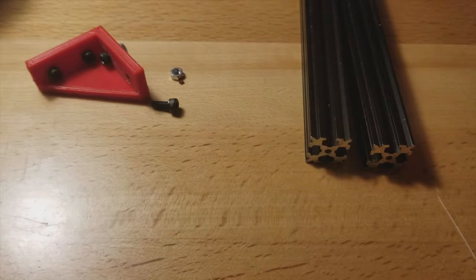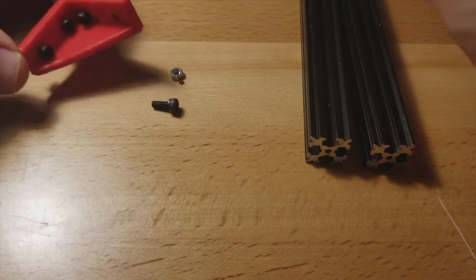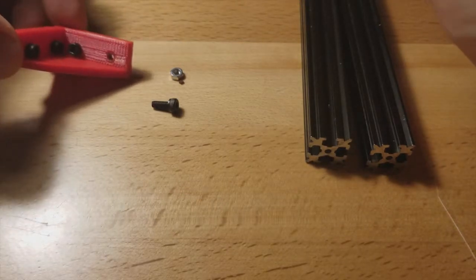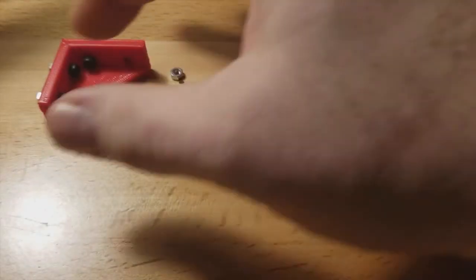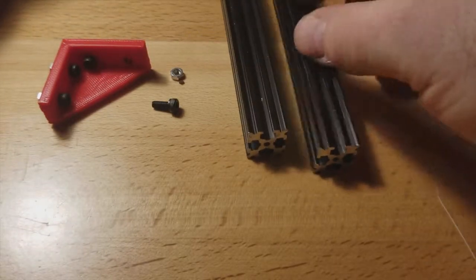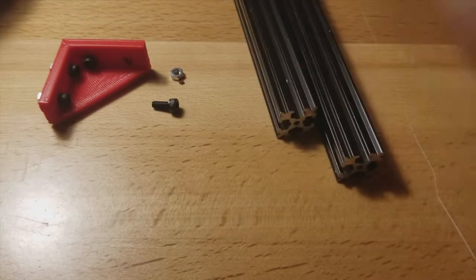So each one of these takes four 8 millimeter M3 hex socket screws. What I'm going to do is just put the last one in, there's already three in there, I'm going to put the fourth one in and then show you how we connect it to the actual extrusion. Bear with me for one second.